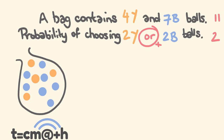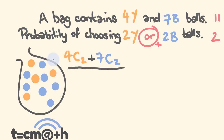For the first part, from four balls we're trying to choose two. To this we are going to be adding — for the blue balls — we're trying to choose two from seven balls. This is all going to go over the total number of combinations: from 11 balls, we're choosing two.